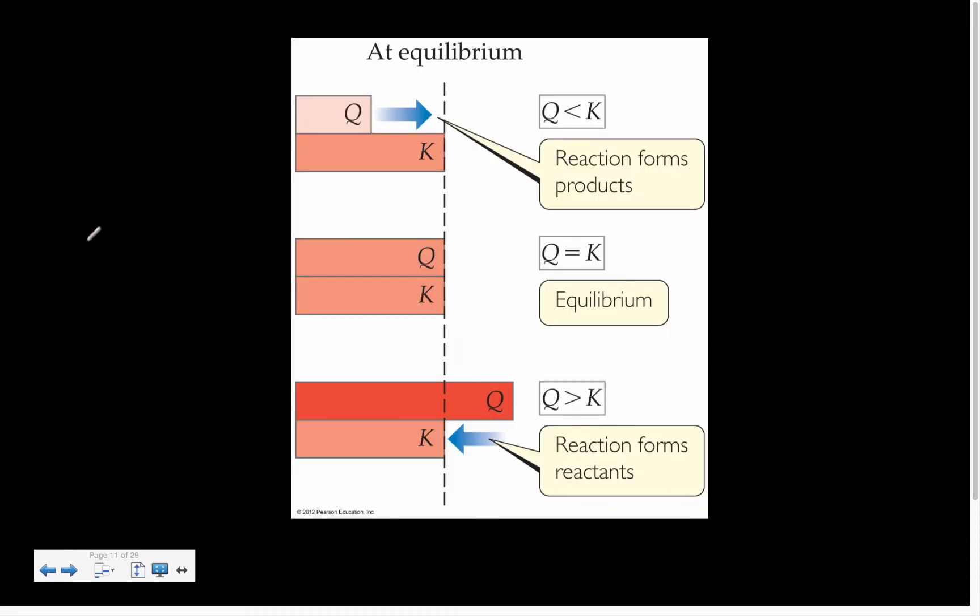Now, if we think about the fact that K and Q are really just the relationship between product and reactant, at its essence, then if we're talking about Q versus K, if Q is less than K, that means we have to be heading in that direction. So if Q is less than K, that means we need to increase.